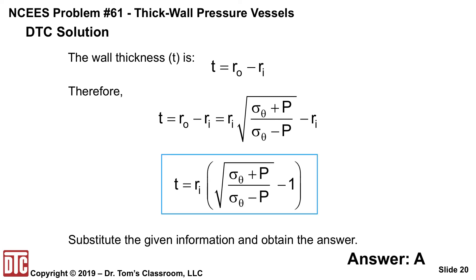If we factor out the Ri, we get the quantity Ri times the square root term minus one. And that's the equation that's at the start. So substitute the two pieces of information that's given to us, and the answer A comes out quickly.